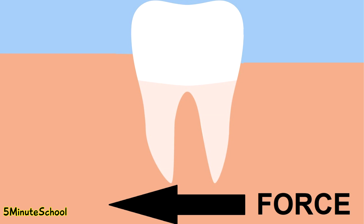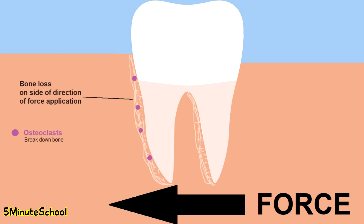However, if you maintain that pressure for a period of time, the bone on the opposite side of the tooth starts to break down. The types of cells which break down the bone are called osteoclasts.